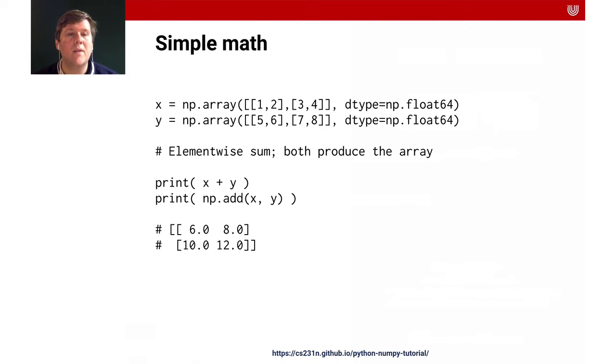You can add them just like you can add numbers. You can do x plus y or you can do numpy dot add xy. It's up to your taste. This would be the element-wise sum which produces another array. You can also do the element-wise difference which will produce another array. These are the numbers subtracted from each other based on their individual elements.